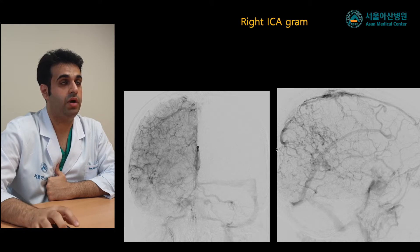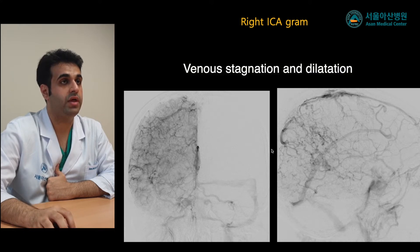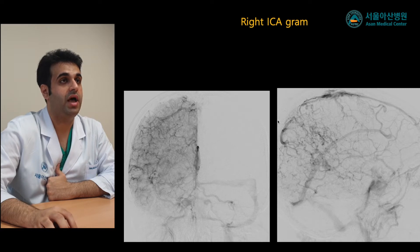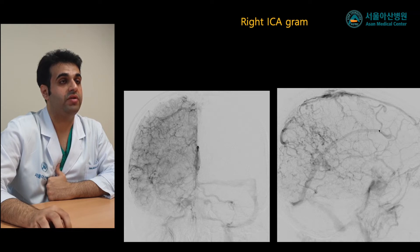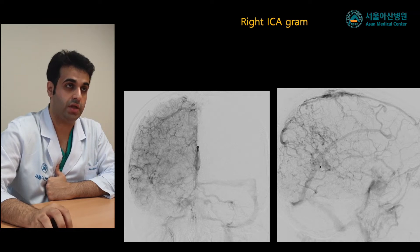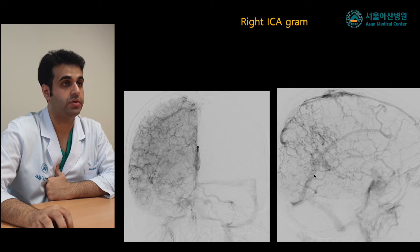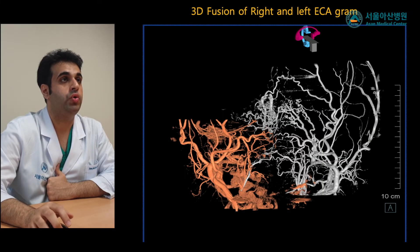The right ICA angiogram was performed and demonstrated venous congestion along the temporal and occipital region, interruption of the posterior superior sagittal sinus, and prominence of the inferior sagittal sinus as a compensatory mechanism.